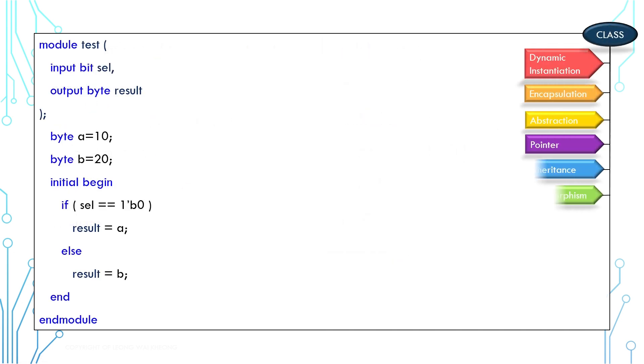Now with that, let's look into the concept of dynamic instantiation. This example has two bytes, A and B. Result will pick A or B depending on the input signal cell. Regardless of which byte is chosen, A and B will always consume two bytes of memory.